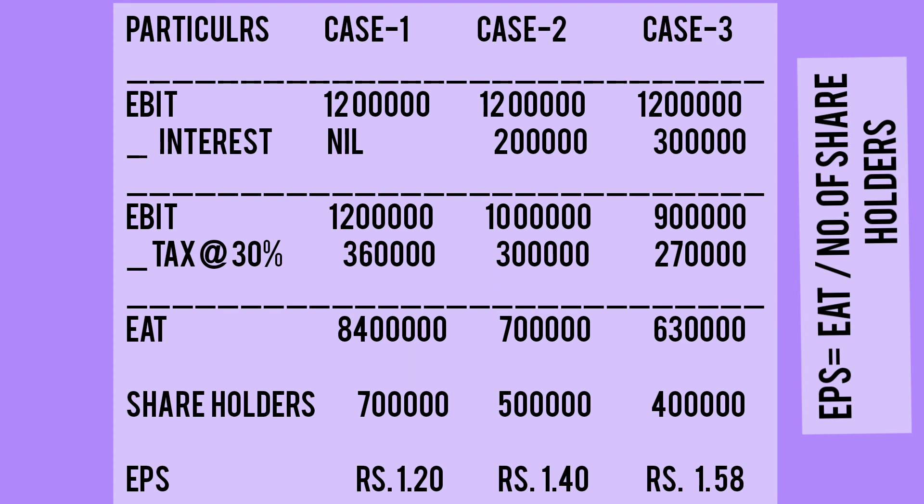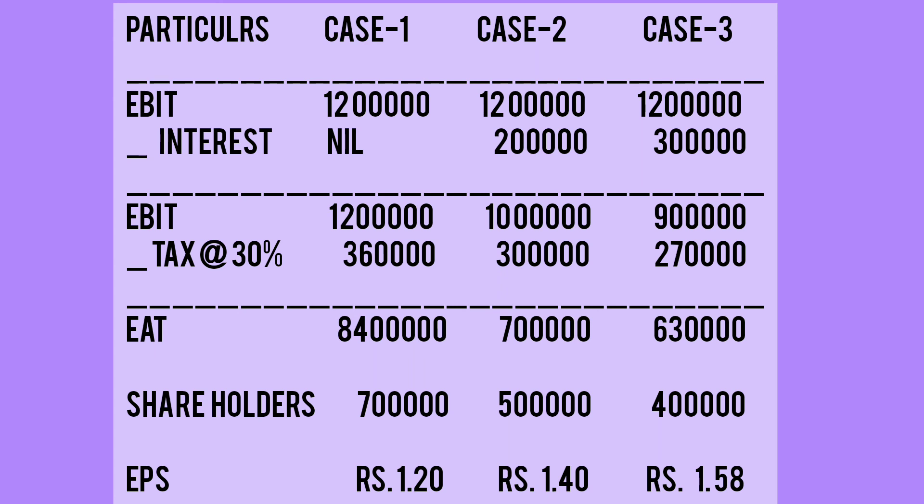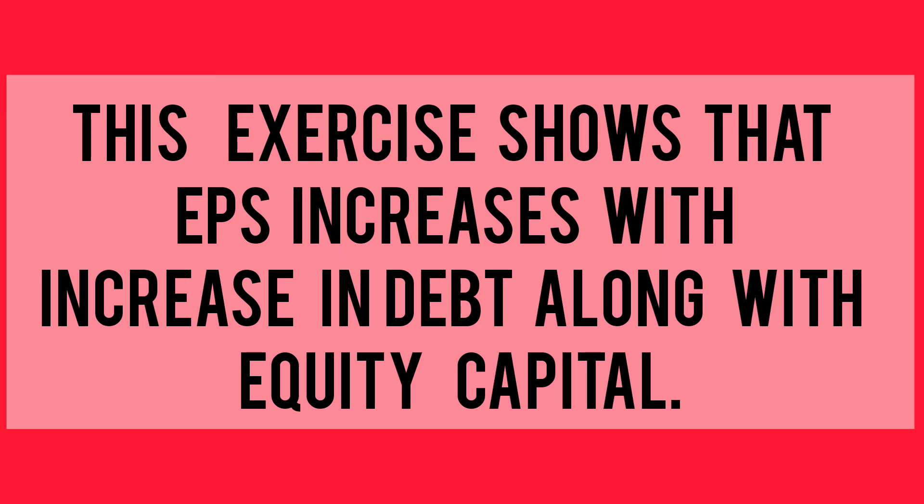The number of shareholders is 7 lakh, 5 lakh, and 4 lakh respectively. So Earning Per Share comes to 1.20, 1.40, and 1.58. Here you can see that with the increase in debt from case one to case three, Earning Per Share is also increasing. This means debt fund is used to increase Earning Per Share, and that is known as trading on equity.